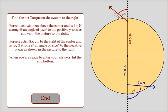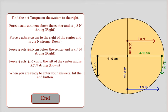These two problems deal with the net torque on an object, in this case a merry-go-round. So let's start with this one.